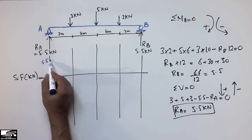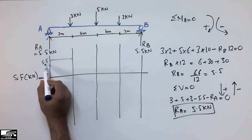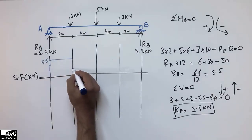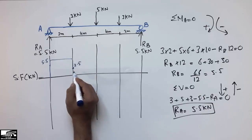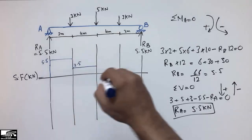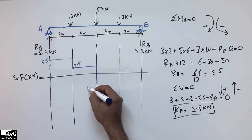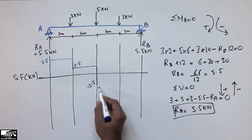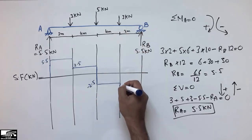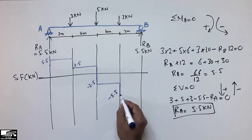Since 5.5 kN is acting upward at A, I draw it upward as +5.5. Then the 3 kN load acts downward, bringing the value down by 3 to +2.5. At the 5 kN load it drops further to -2.5. Then the final 3 kN load brings it to -5.5.